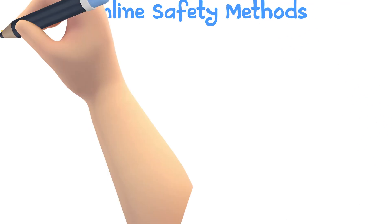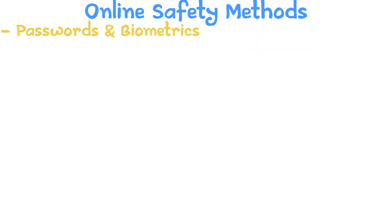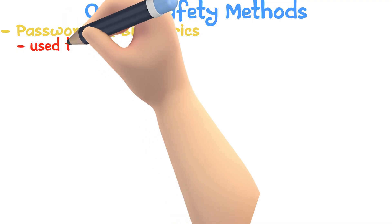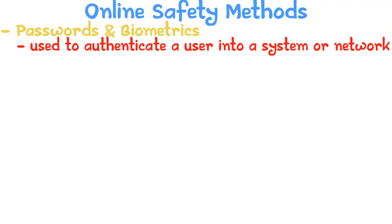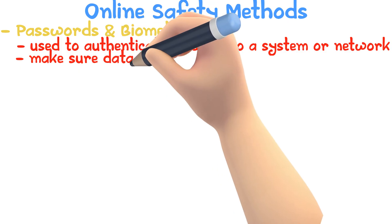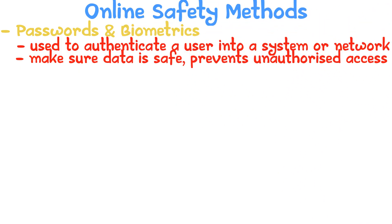Methods to be safe online: passwords and biometrics. Passwords, PINs, and biometric scanners are used to authenticate the user into a system or network. Passwords make sure data is safe and prevent unauthorized access. Biometrics have now become more popular.